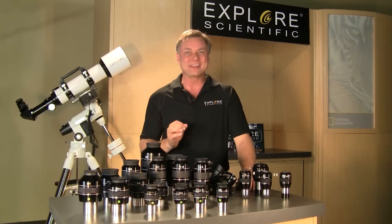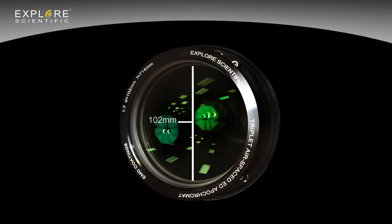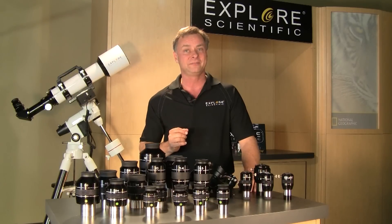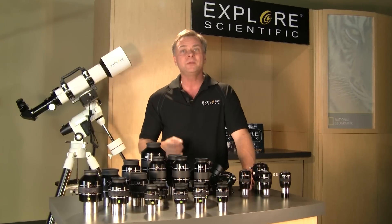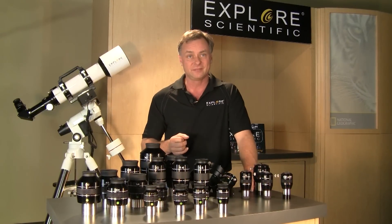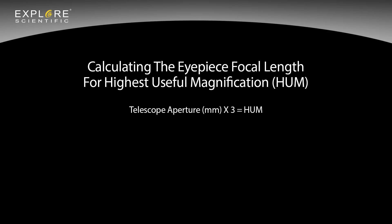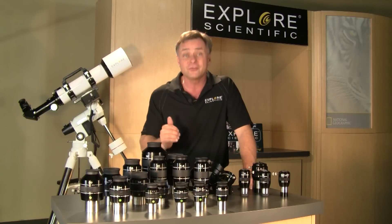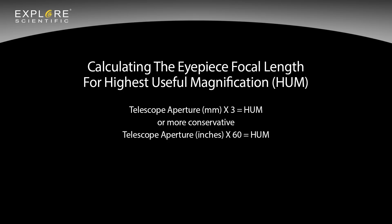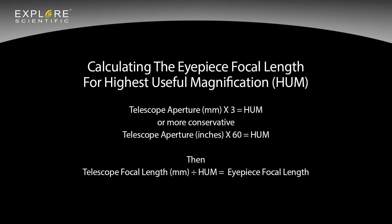To determine highest useful magnification on any given telescope, take the telescope's aperture in millimeters and multiply by 3. With a 102 mm refractor, that's 306 power. A more conservative number can be found by taking the telescope aperture in inches and multiplying by 60, or by 50 if seeing conditions aren't great. Then take the telescope focal length in millimeters and divide it by the highest useful magnification number — that gives you the eyepiece focal length you need.